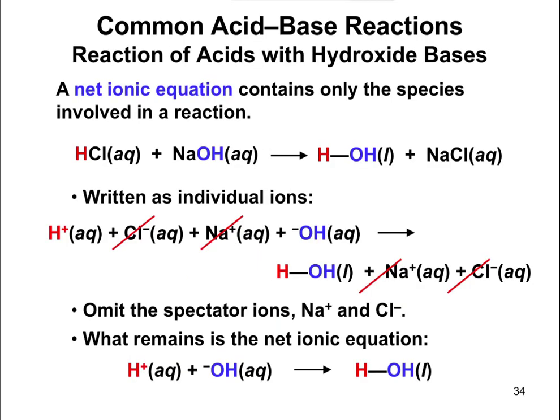In the previous example I broke down the acid and the base into individual parts, partly in preparation for this slide on net ionic equations. If you hear the term net ionic equation, it basically refers to a chemical equation that shows only the species that actually do something in a reaction. Looking at HCl plus NaOH going to water and sodium chloride, we write everything as individual ions: H+, Cl−, Na+, and OH−.